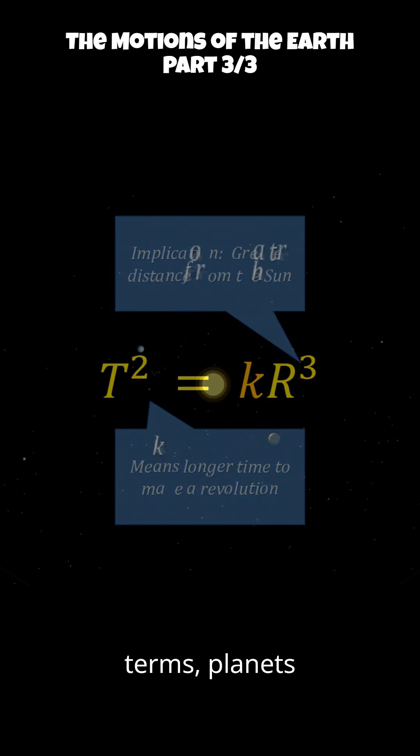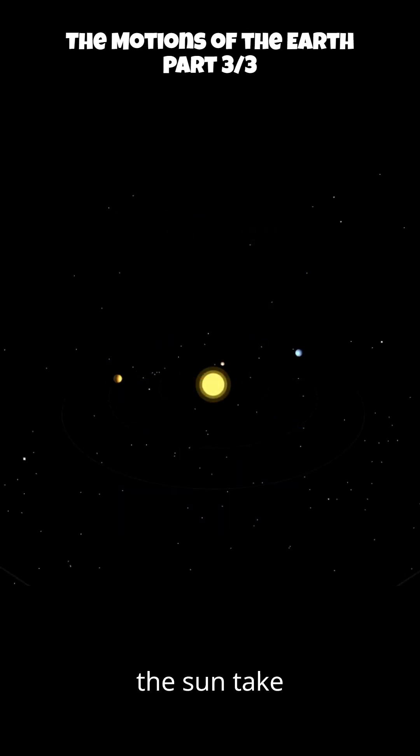In more general terms, planets that are farther from the sun take much longer to complete one orbit than those close to the sun.